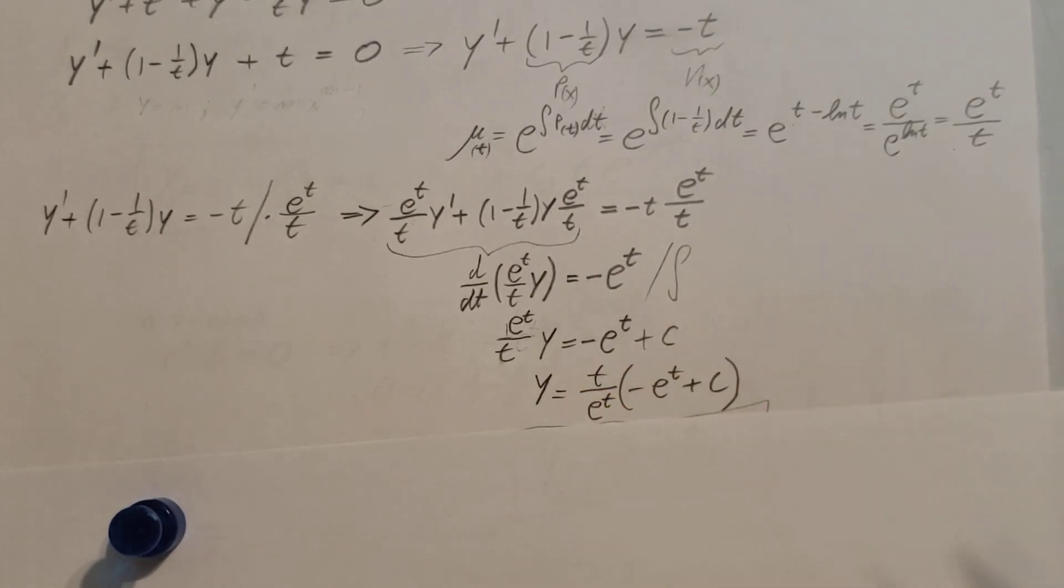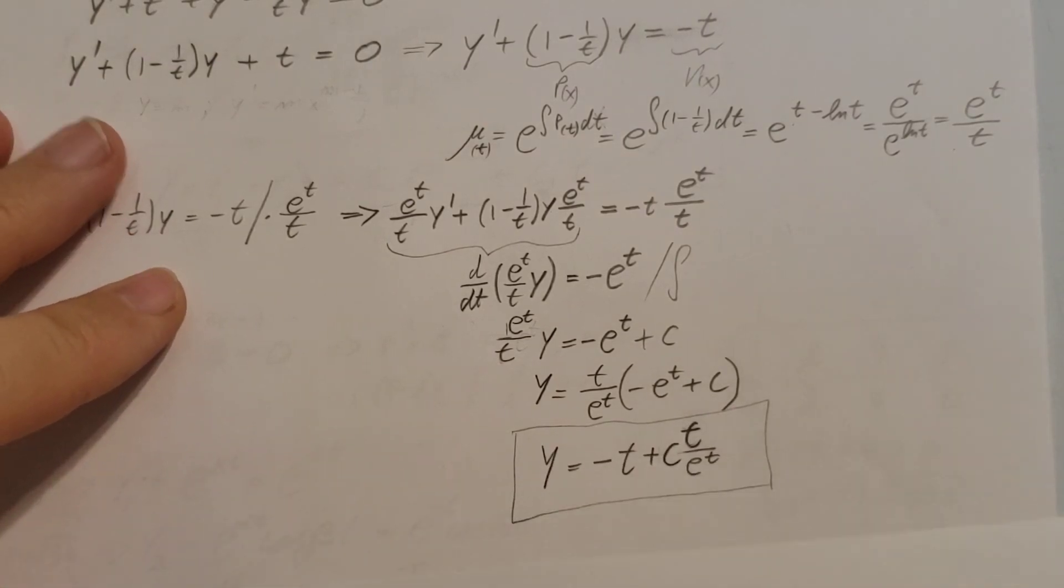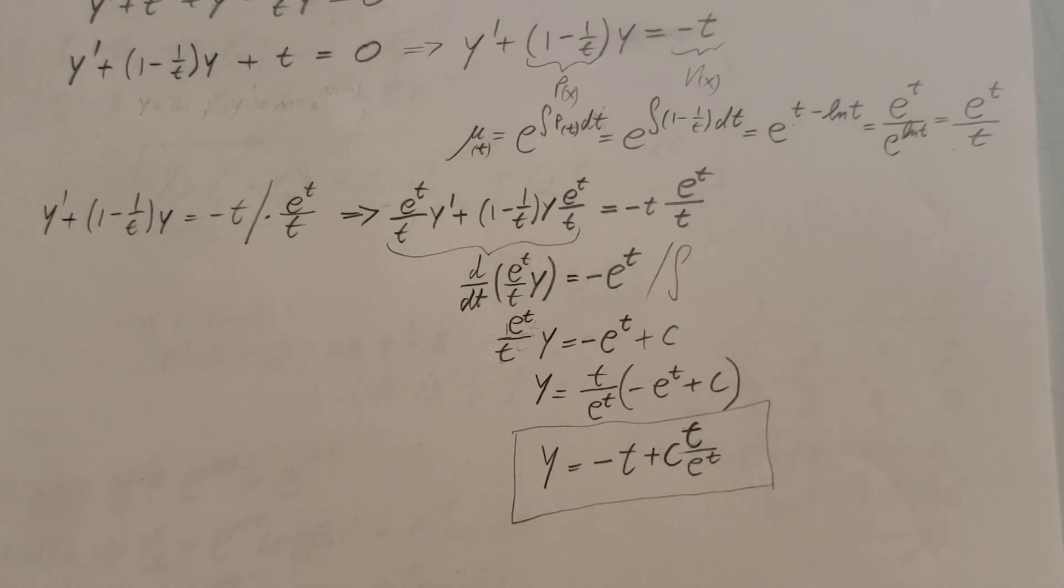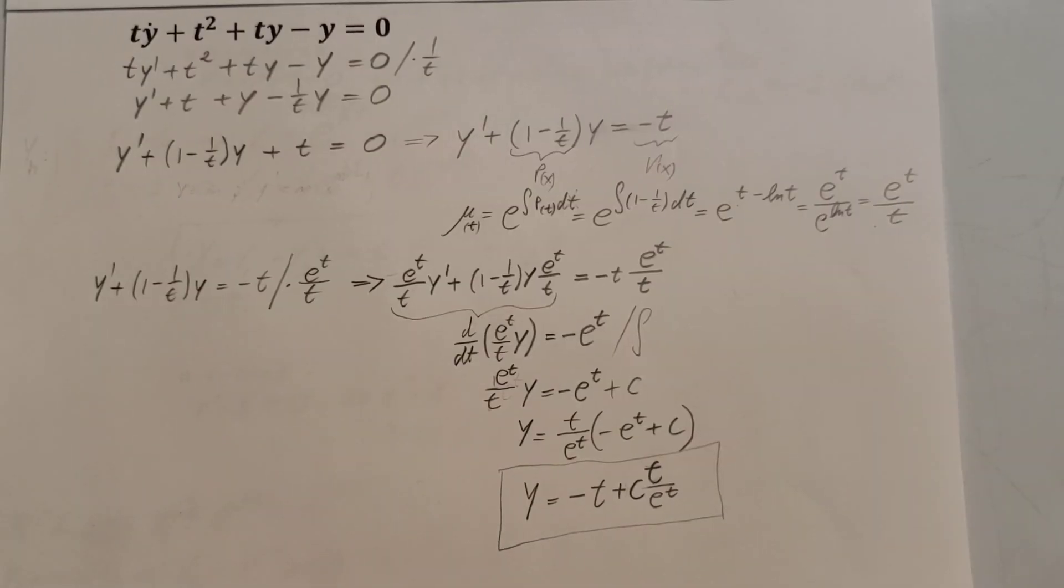Now we want to make sure that we express our solution with y by itself. So y equals, get this one on this side, and there you have it: t over e to the t times in parentheses minus e to the power of t plus c. Or distribute it out, I have a little bit nicer view, and here you have it. There it is, that would be it, pretty simple. Please give a like to the video guys so other people can find it as well. Thank you for watching.